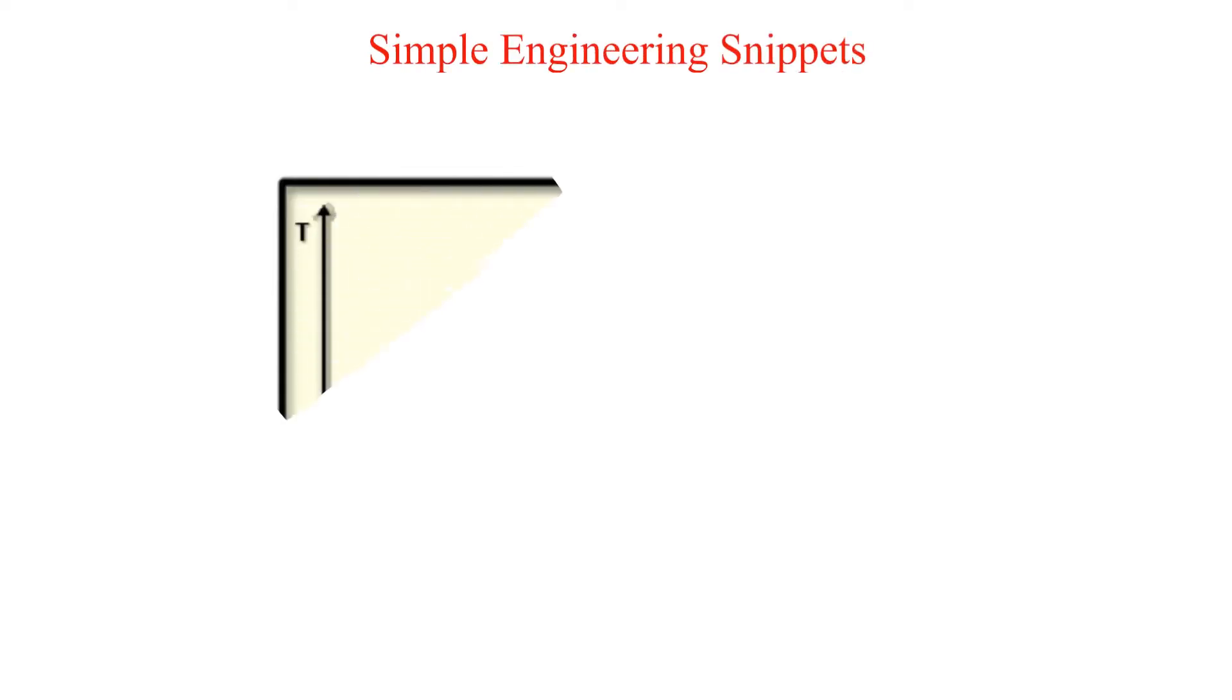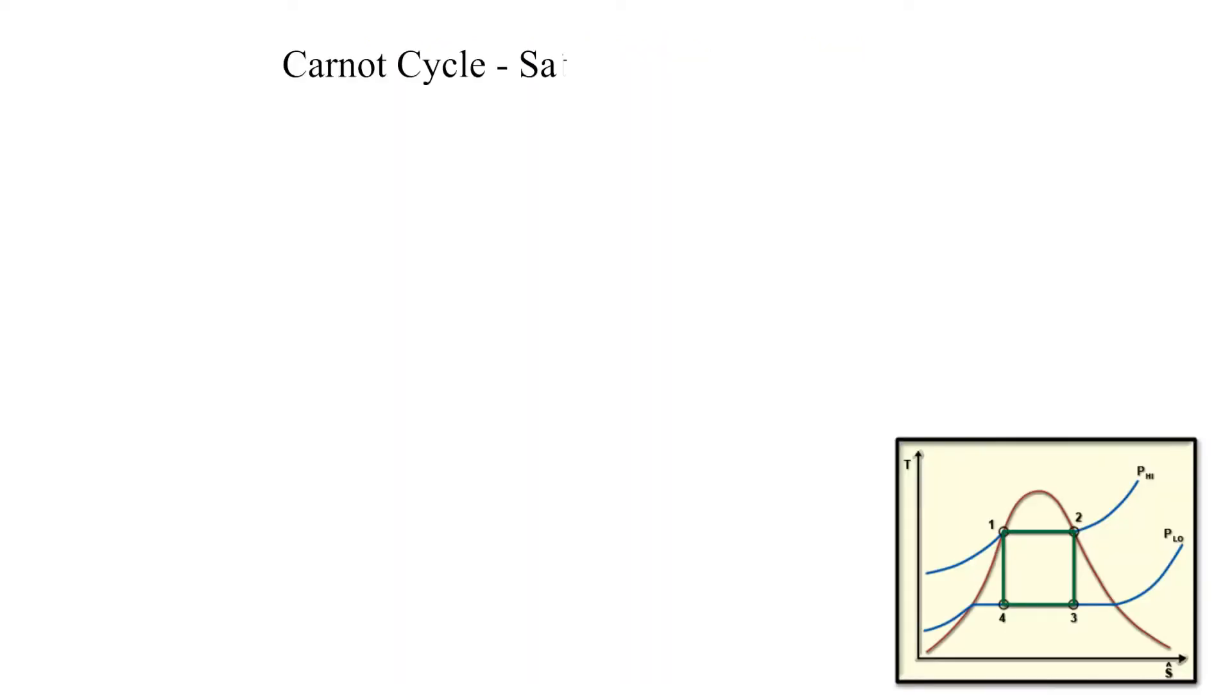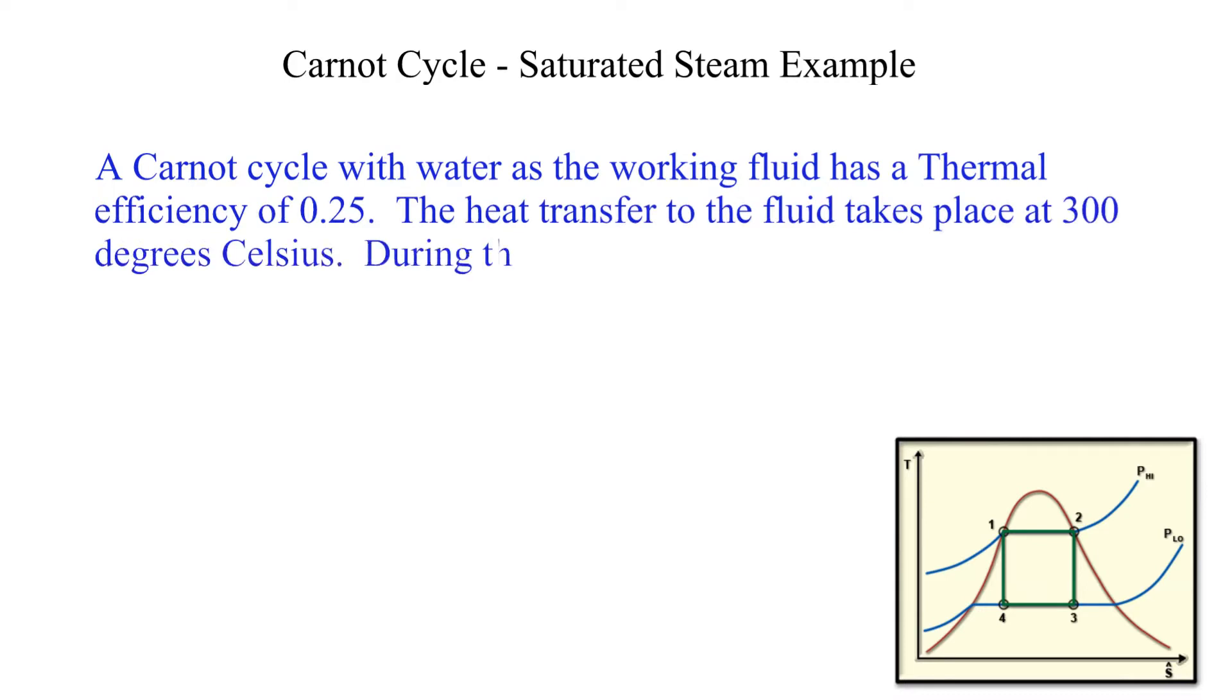Welcome to another simple instructional snippet. In this instructional video, we will work a Carnot Cycle example. A Carnot Cycle operates with water as the working fluid. The thermal efficiency is 0.25. The heat transfer into the cycle takes place at 300 degrees Celsius, which changes the water from a saturated liquid to a saturated vapor.